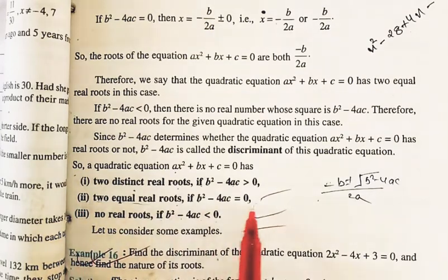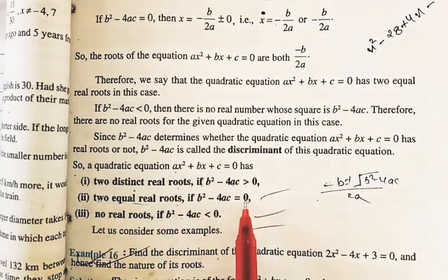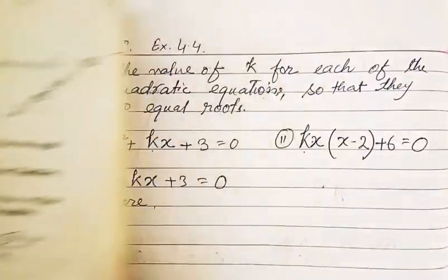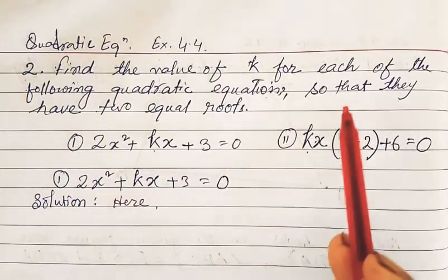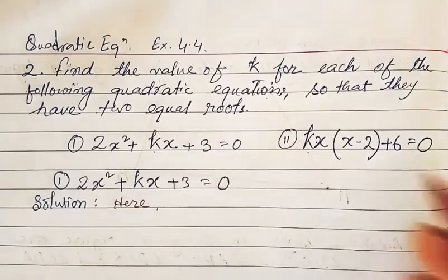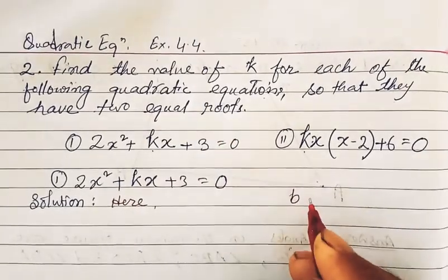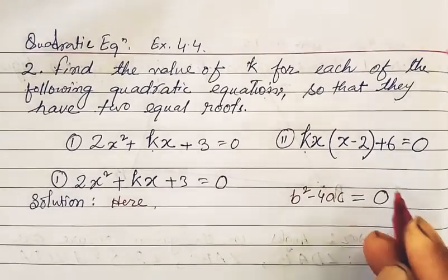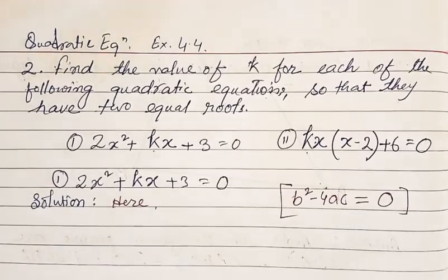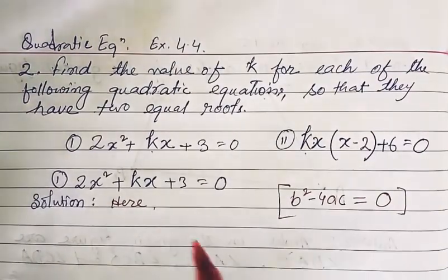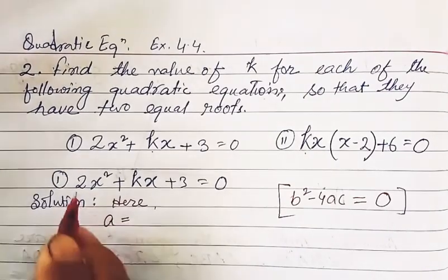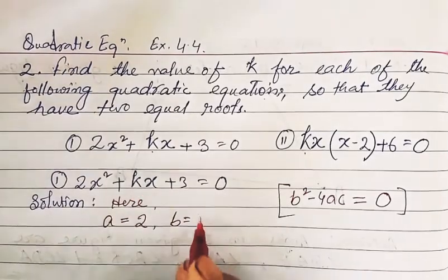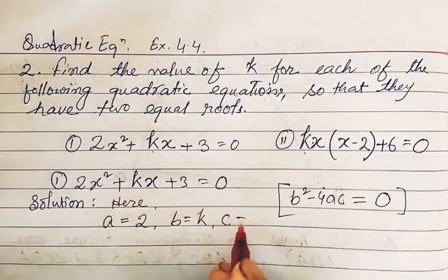If b² - 4ac is less than zero, then there are no real roots. And if b² - 4ac is equal to zero, then there are two equal roots. Since our equation is given to have two equal roots, b² - 4ac should equal zero. Here, a = 2, b = K, and c = 3.